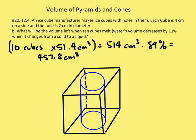Part 2 asks: what will be the volume left when 10 cubes melt? Water's volume decreases by 11 percent when changing from solid to liquid. We have 51.4 cubic centimeters per cube, multiplied by 10, giving 514 cubic centimeters total. Since volume decreases by 11 percent, we keep 89 percent — multiplying 0.89 times 514 gives us 457.8 cubic centimeters.